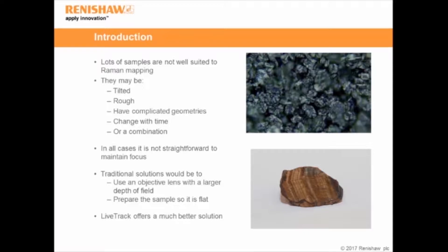In all these cases, it's not straightforward to maintain focus. The traditional solution would be to use an objective lens with a larger depth of field, which means going to a lower magnification, lower numerical aperture objective. While this is fine, because we're reducing the numerical aperture, we also sacrifice Raman intensity and spatial resolution — so at a cost of mapping these samples, we're actually losing quite a bit of our performance.